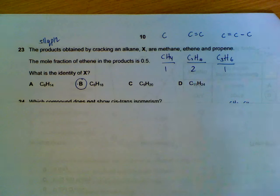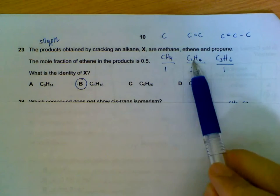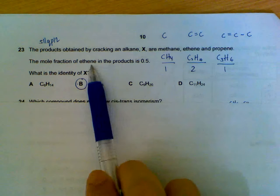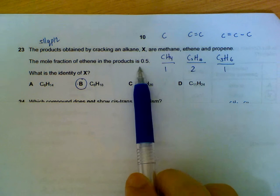Number 23. There are quite a few approaches to this question. I'll choose the most straightforward one. I have the three products: methane, ethene and propene. And I know that ethene is 0.5 mole fraction of all the products. So I'll try to assign whole numbers to all of them.